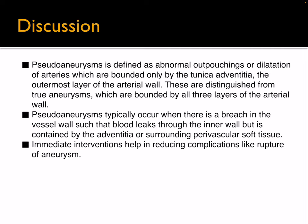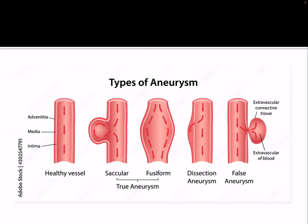Pseudoaneurysm is defined as an abnormal outpouching or dilatation of arteries which are bounded only by the tunica adventitia, the outermost layer of the arterial wall. These are distinguished from true aneurysms, which are bounded by all three layers of the arterial wall. Pseudoaneurysms typically occur when there is a breach in the vessel wall such that flow leaks through the inner wall but is contained by the adventitia or surrounding perivascular soft tissue. Immediate intervention helps in reducing complications like rupture. In this figure, we can see the difference between a true and a false aneurysm.